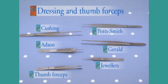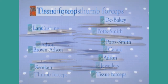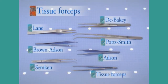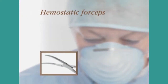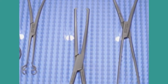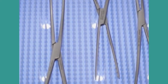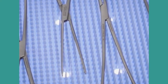Dressing forceps are tweezer-type forceps. Their tips are usually serrated horizontally or have a smooth toothless surface. These are similar to the preceding model except that they have teeth at the ends. Tissue forceps are designed to grasp and hold tissue or skin. Hemostatic forceps are used to hold, grasp, and dissect tissue, muscle, organs, and bone.